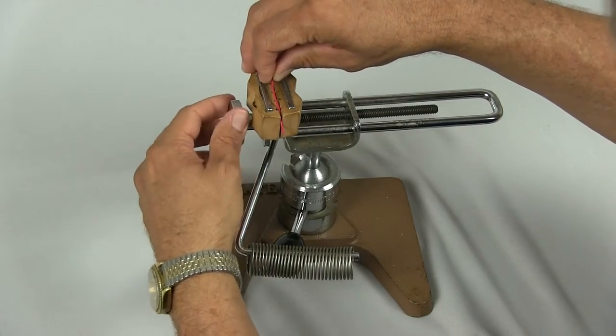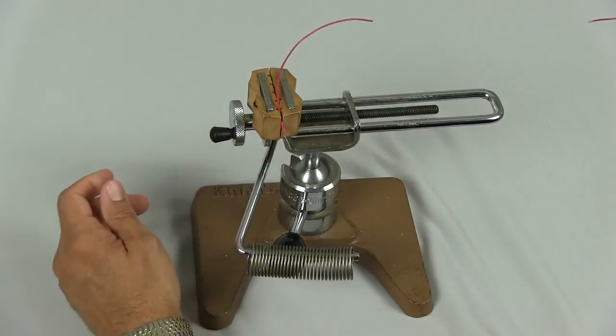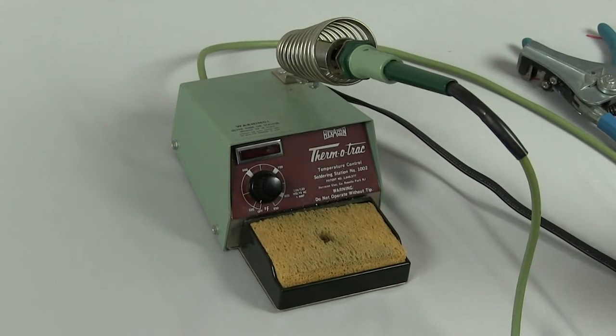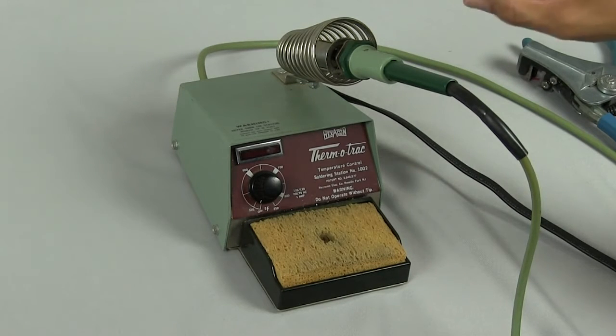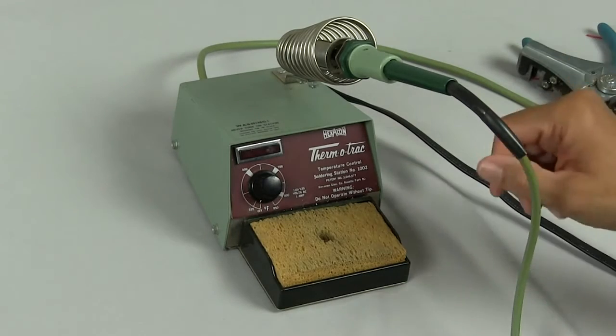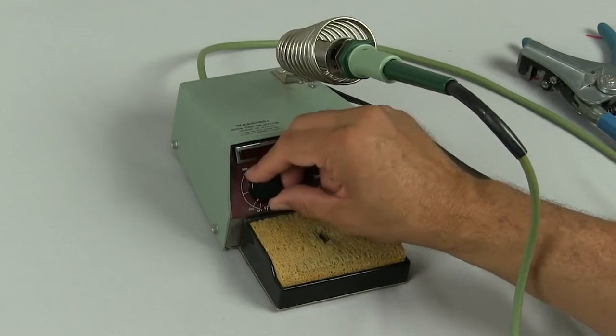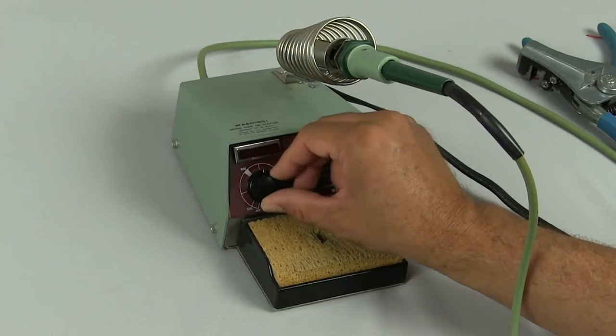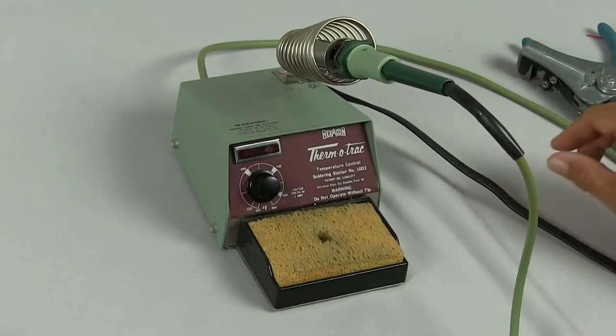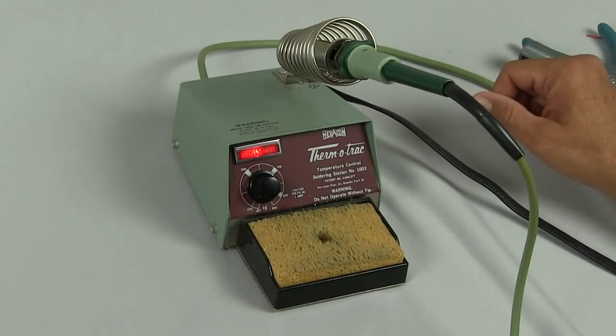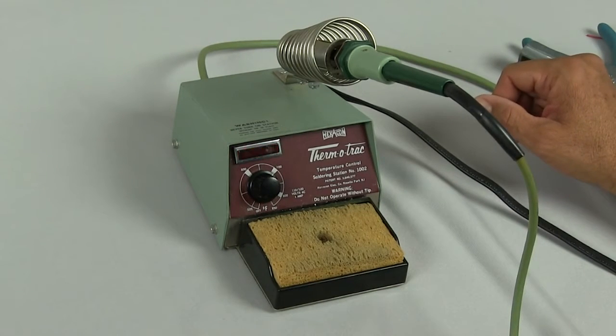So, we are going to put it in our vise like this. Earlier I talked about the solder iron, the features that you want to see on a good solder iron. Right now I want to show you how to use your solder iron. We are going to turn the solder iron on and I like working, when I am working with 22 gauge wires, I like working at around 700 degrees setting.